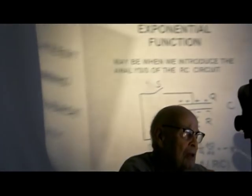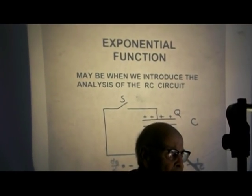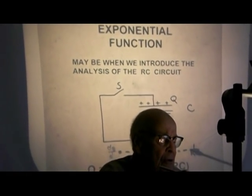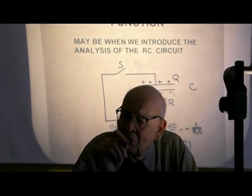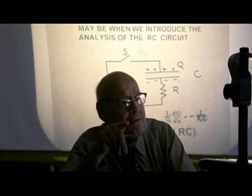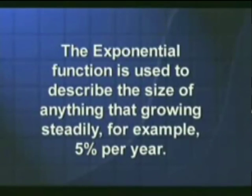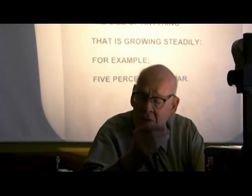In physics, the first place that you encounter the exponential function is when we're talking about the discharge of a capacitor through a resistor. The fractional decrease in the charge on the capacitor has a minus sign, and it's a constant. What we want to do is change that minus sign to a positive sign. So instead of having something decaying a fixed fraction per unit time, we have something increasing a fixed fraction per unit time. The exponential function is the mathematical function we use to describe the size of anything that was growing steadily — for example, something growing 5% per year.